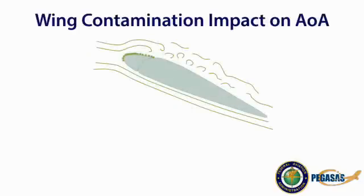Wing contamination of any type will affect the parasitic drag of the wing. This impact is felt by having to fly a specific airspeed at a higher angle of attack to produce the same amount of lift. The contamination will also cause the airflow to separate earlier than a clean wing, causing higher drag at any angle of attack. Calibration of angle of attack displays could be affected by wing contamination, and information presented may be unreliable if the wing is contaminated.